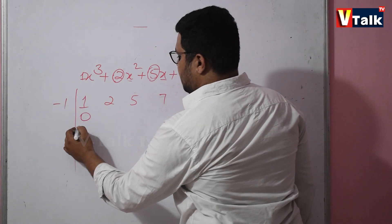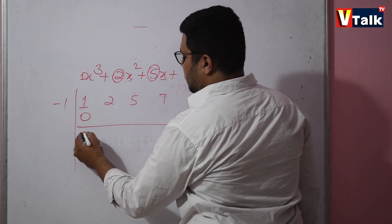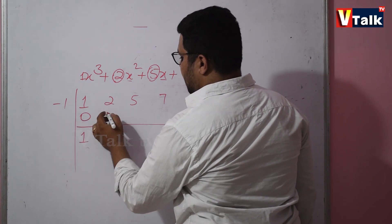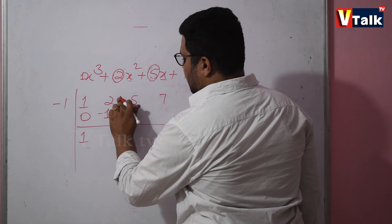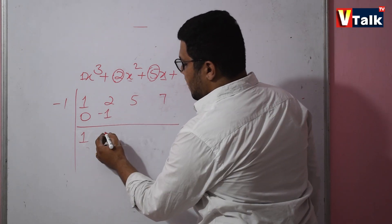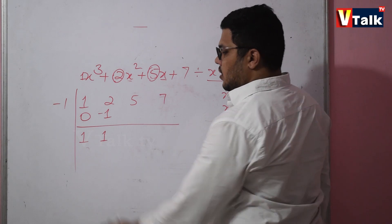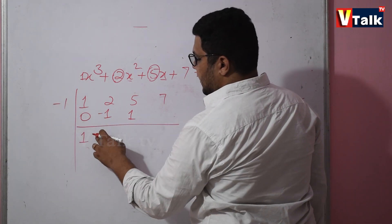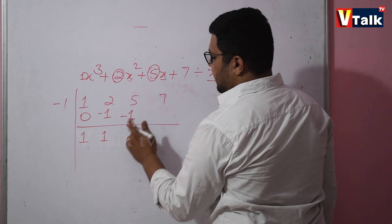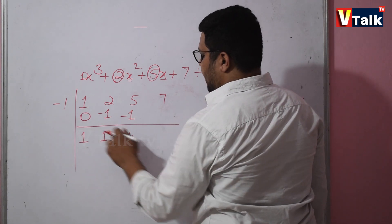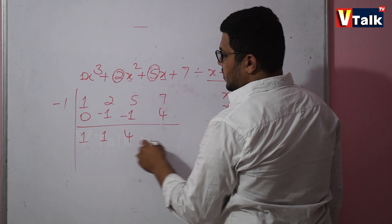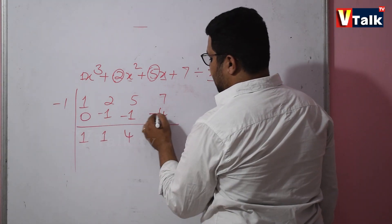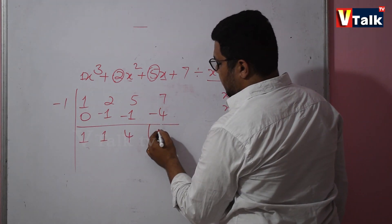1 plus 0 is 1. 1 into minus 1 is minus 1. 2 minus 1 is 1. Minus into plus is minus. 5 minus 1 is 4. 4 into minus 1 is minus 4. Minus into plus is minus. So the remainder will be 3.